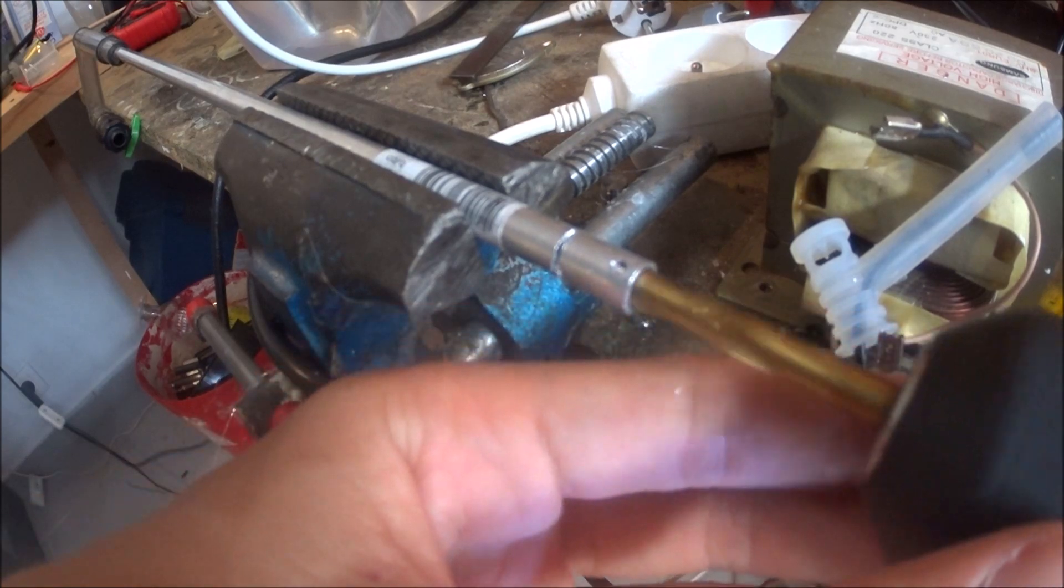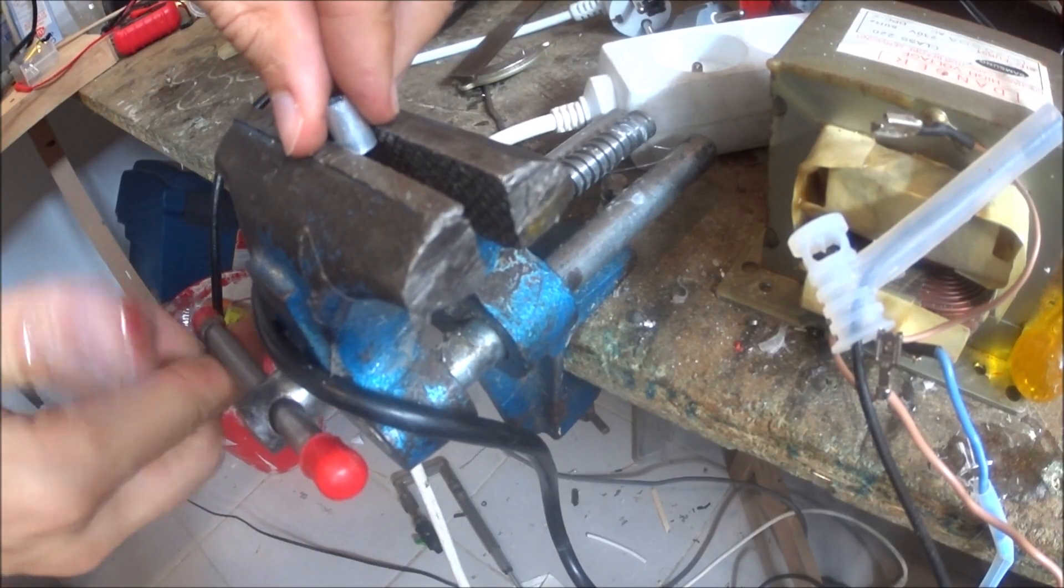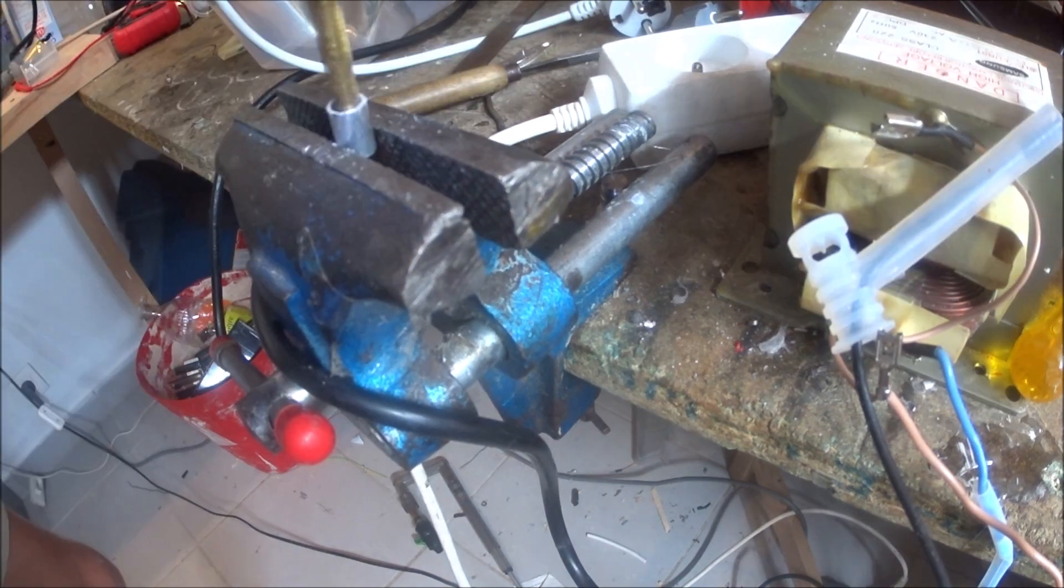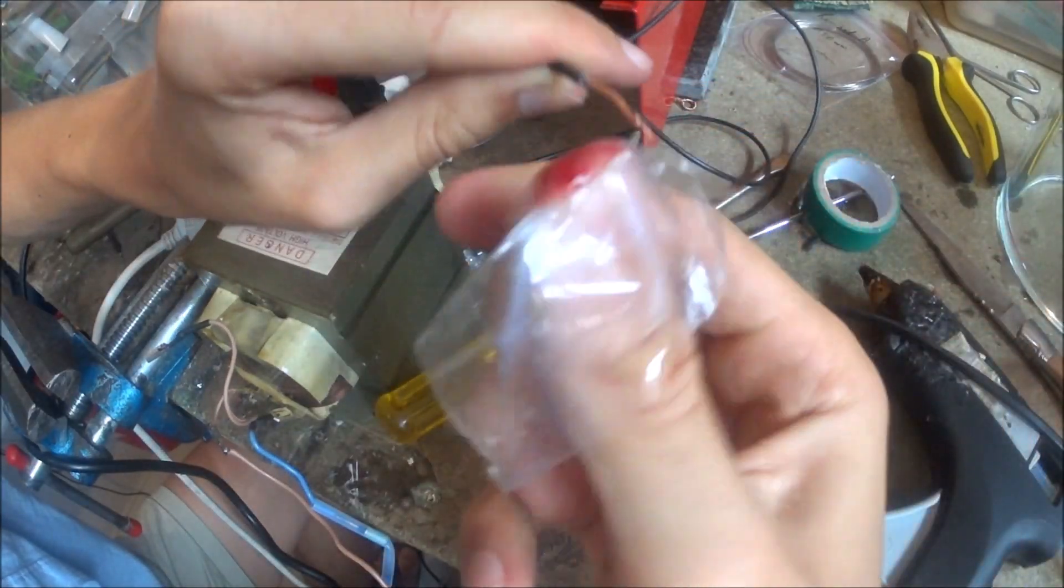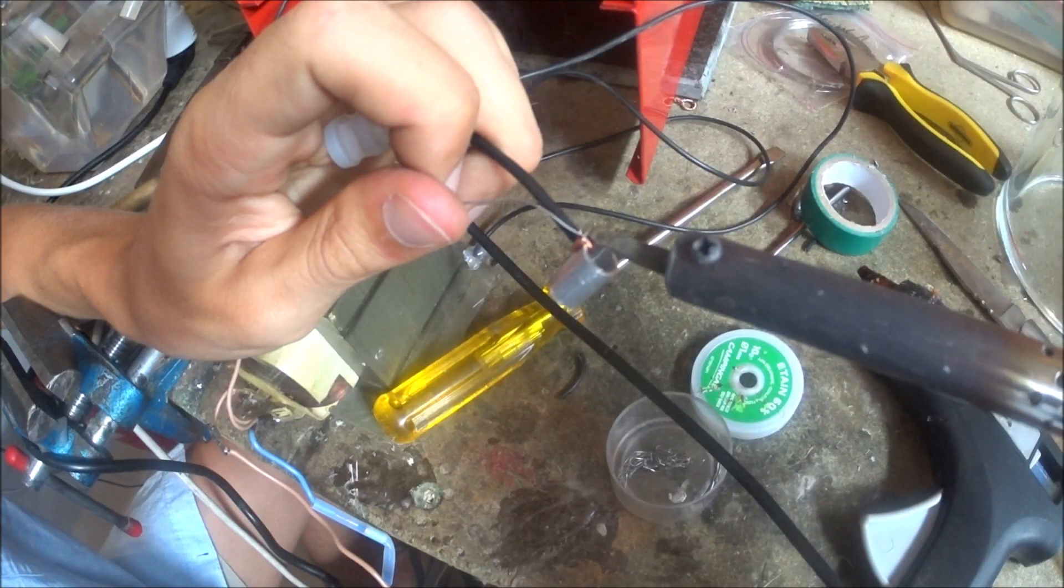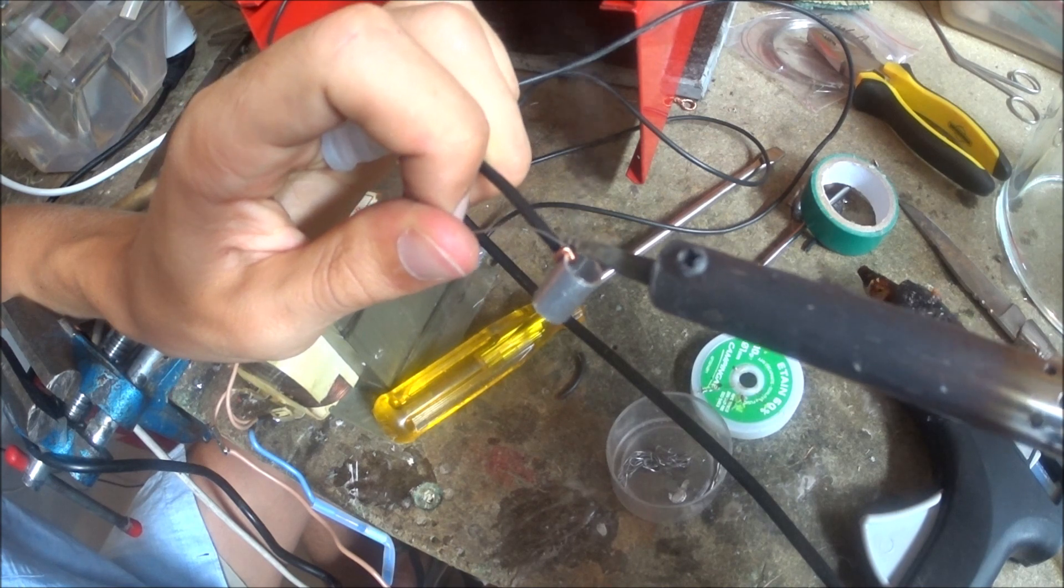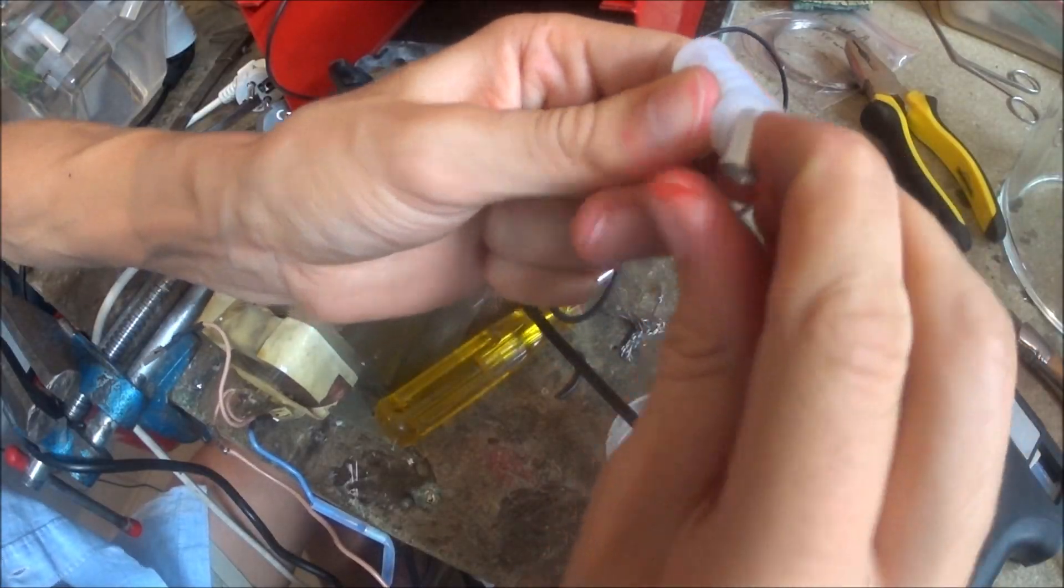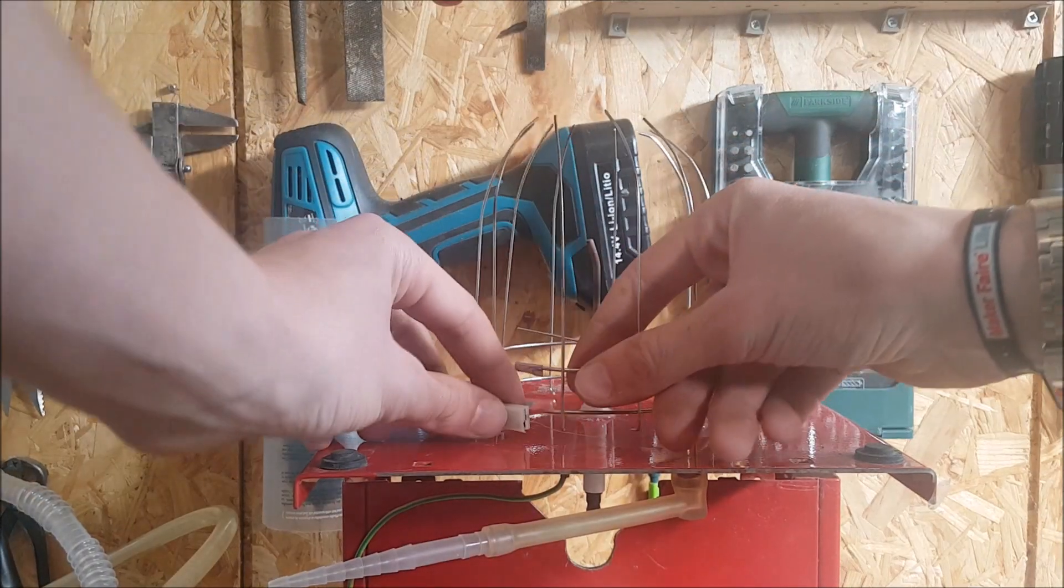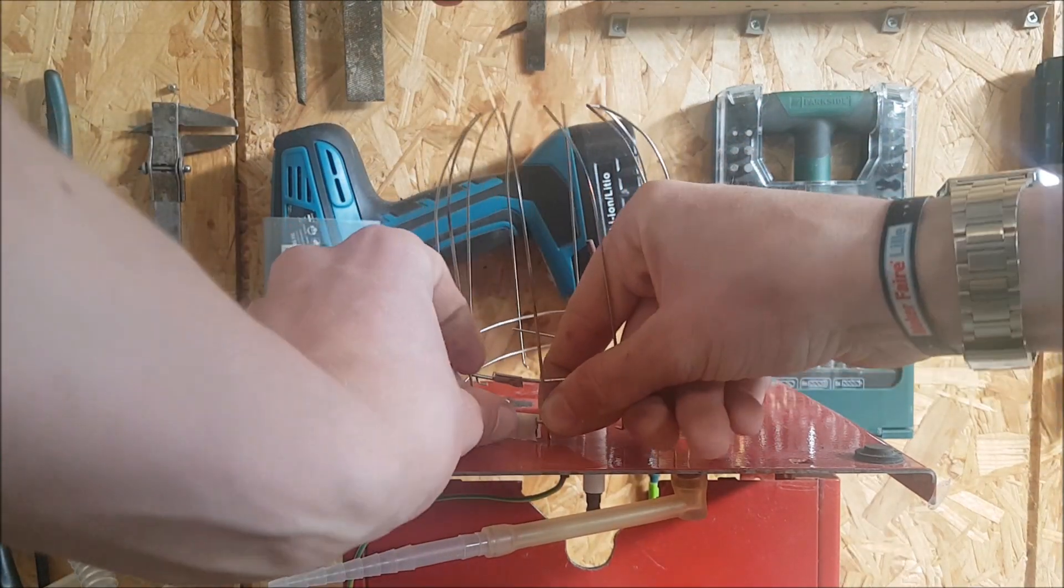I also took the time to make a better and safer attachment for the high voltage electrode. And instead of a magnet, I used solder to connect the chassis to the outer grid.